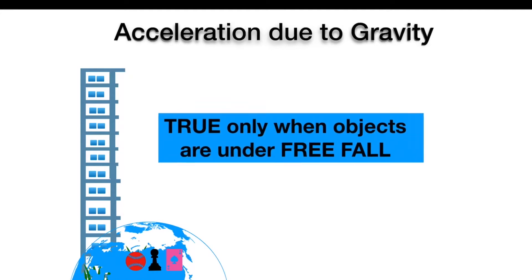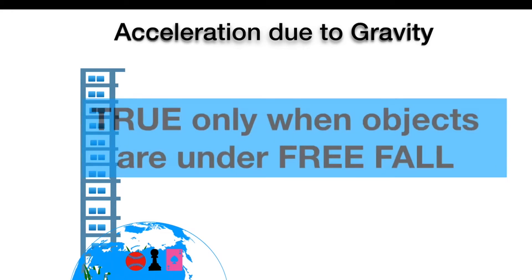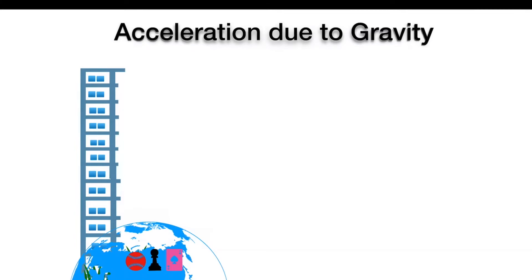This is true only when objects are in free fall. Free fall means objects are under gravity only and no other force is acting on them — not even air resistance. So when we say these objects will fall and reach the ground at the same time, we assume there is no air resistance; there is only the force of gravity. This is equivalent to the fall being under vacuum.